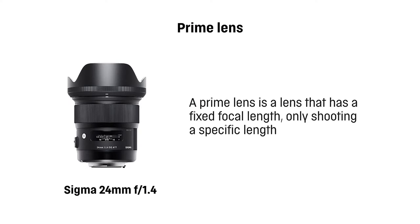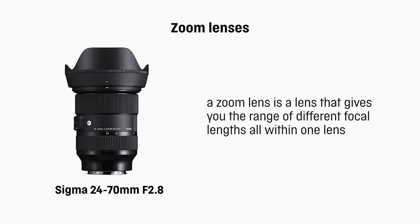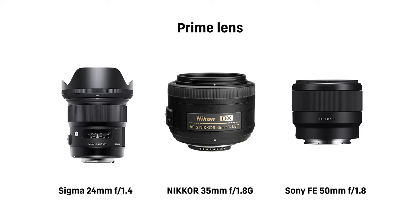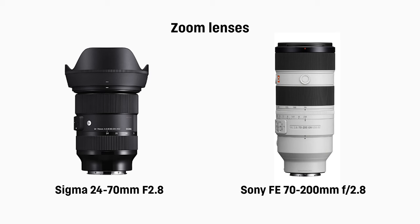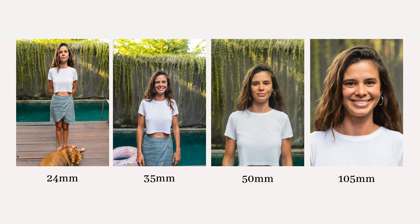Lenses come in two different types: zoom lenses and prime lenses. A prime lens has only one fixed focal length and only shoots at that specific length, while a zoom lens gives you a range of different focal lengths all within one piece of equipment. Common prime lenses are 24mm, 35mm, 50mm, or 70mm. Two very common zoom lenses would be a 24-70mm and a 70-200mm. A zoom lens gives you every single focal length available in one place without having to switch lenses, which can be very convenient.